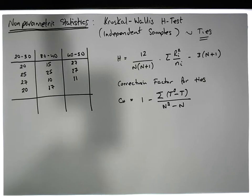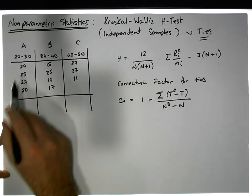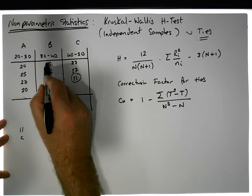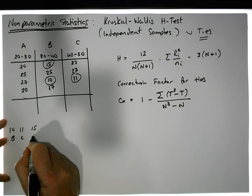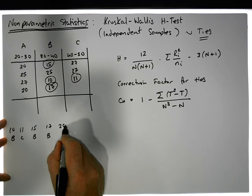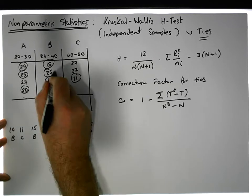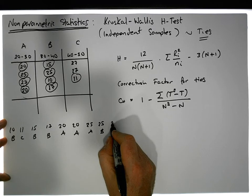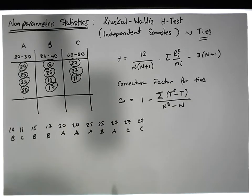The first thing we need to do is rank all observations relative to each other. We'll call the groups A, B, and C. Finding the smallest element first: the smallest is 10 in group B, then 11 in group C, then 15 in group B, then 17 in group B, then we have 20 in group A and another 20 in group A, then 25 in group A and 25 in group B, then 27 in group A, 27 in group C, and another 27 in group C.